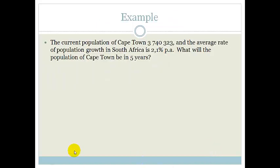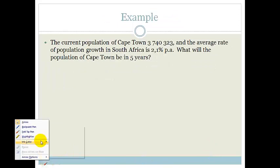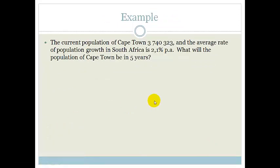So let's look at an example to get to grips with this. And again, just like with inflation, if I talk population growth, you think compound interest formula. Okay, you have to know to do that. So the current population of Cape Town is 3,740,323. The average rate of population growth in South Africa is 2.1% per annum. And it asks us what will be the population in Cape Town in five years.